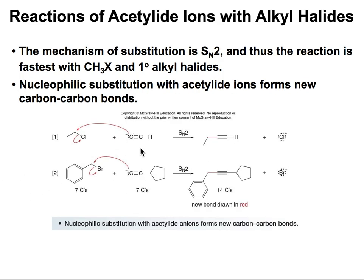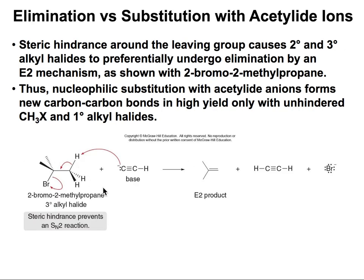Here we have a couple of examples where we start with a primary alkyl halide and use two different acetylide ions. This reaction can be very helpful when extending your carbon chain. Here we start with two carbons and end up with four. And in another example, we end up with a total of 14 carbons — showing how useful this reaction is for chain extension with primary alkyl halides.